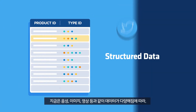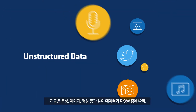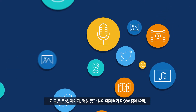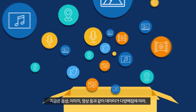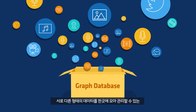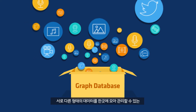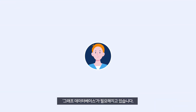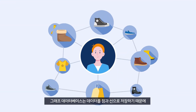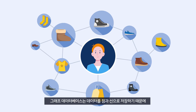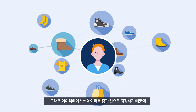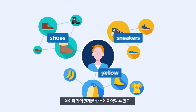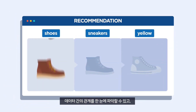Today, with the diversification of data including voice recordings, images, and videos, a graph database is sought after when collecting and managing different types of data. The graph database saves data in nodes and edges, making the relationship between data transparent.